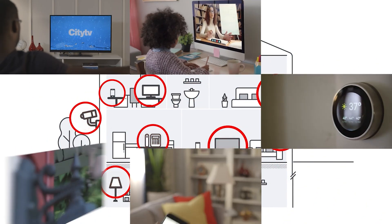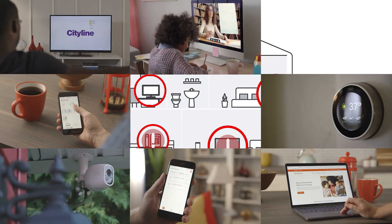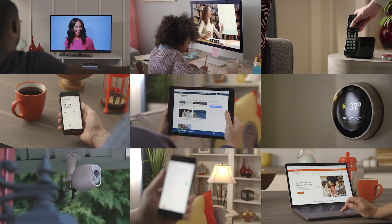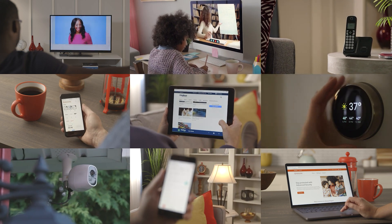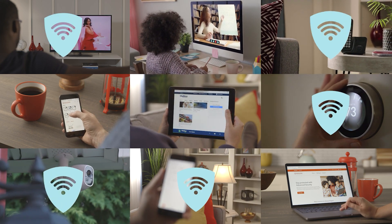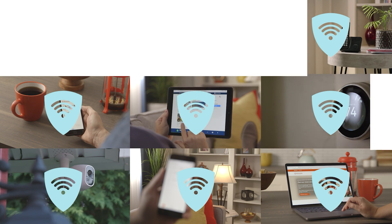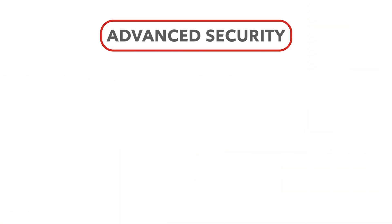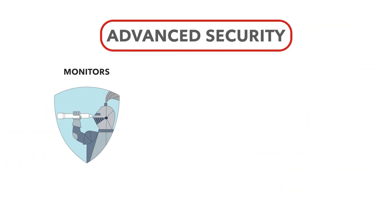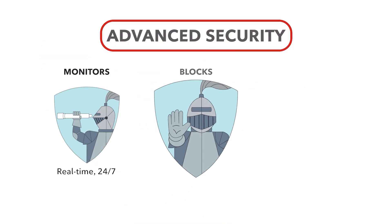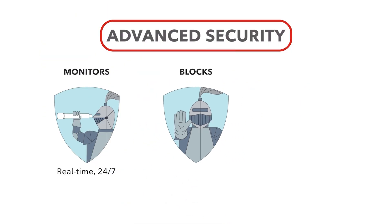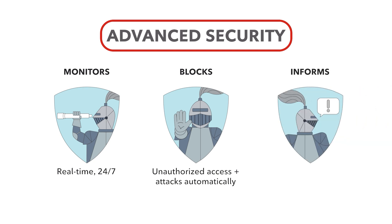With advanced security, you can connect with confidence and help keep your personal information safe on all the devices on your home network. Advanced security provides intelligent protection in three steps: it monitors your home network activity in real time, 24-7; it blocks unauthorized access and attacks automatically; and it informs you when suspicious activity is detected.